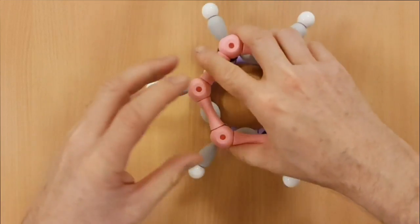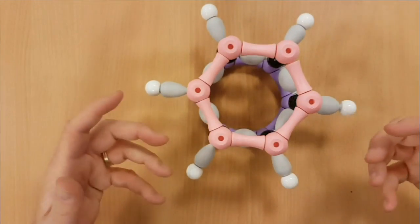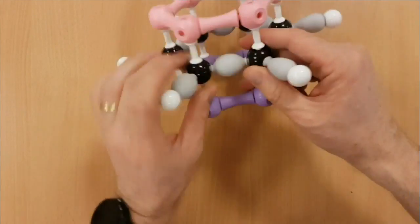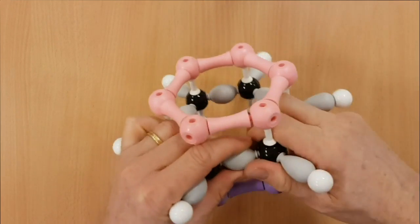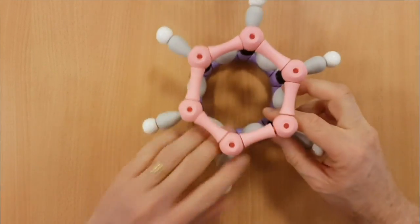Now these rings of electrons make benzene more stable than you'd expect, so it's actually very difficult for chemicals to break this benzene ring. These rings of electrons make the benzene ring very hard to break.